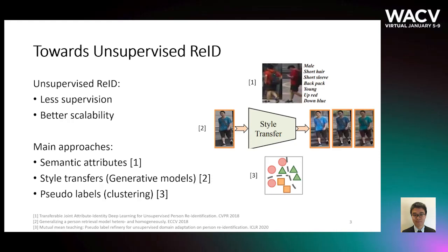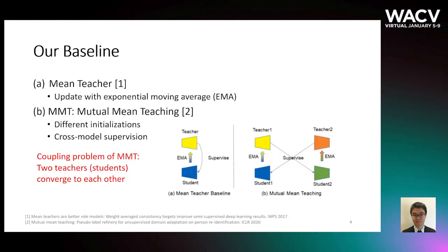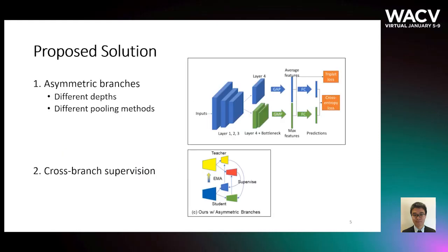For example, with clustering, our baseline is Mutual Mean Teaching (MMT) for unsupervised re-ID, where two teachers supervise two students of different initialization in a cross-model manner. Such a design makes two networks explore different features from the same input. However, as different initialization only affects the beginning, the weights of two networks become more and more similar during training. We call this the coupling problem of MMT.